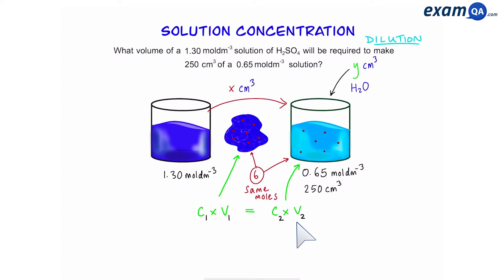So now all we have to do is fill out this equation. V1 is the volume that we're going to transfer. This is the initial concentration and C2 and V2 are over here. So we're going to put these values into the equation to give us 1.3 times X equals 0.65 times 250. Then we're going to solve for X and get a volume of 125 centimeters cubed.